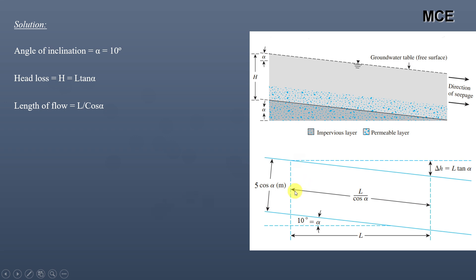The length of flow — that is the inclined length through which flow is occurring — is equal to the hypotenuse of this triangle, which is L divided by cos(α).